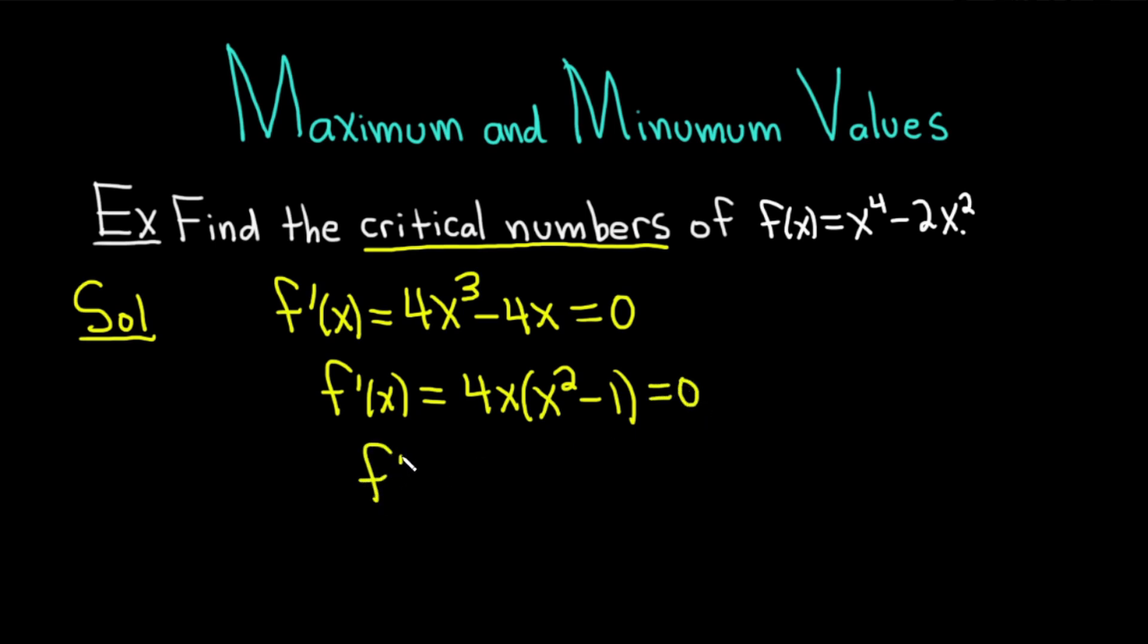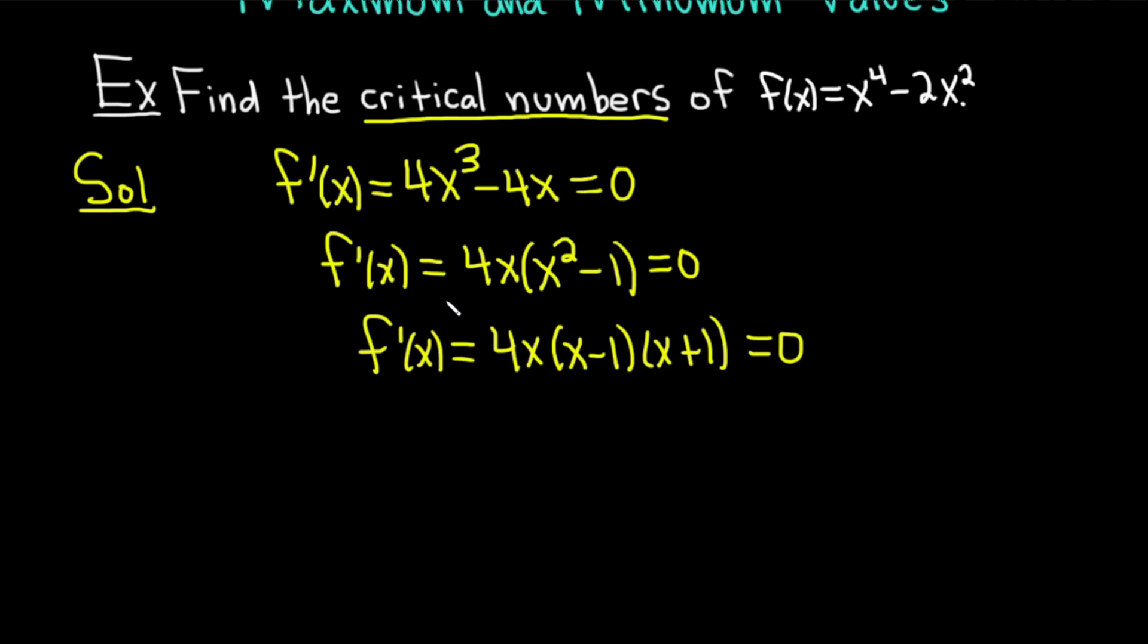So f'(x), I'm just going to write it again. This is equal to 4x. This is the difference of squares formula. It's just (x - 1)(x + 1). Pretty easy factoring there. And this is equal to 0. We have a product equal to 0, so we set each factor equal to 0. So 4x = 0, or x - 1 = 0, or x + 1 = 0. And we can divide this one by 4. So we end up with x = 0 here for our first critical number.